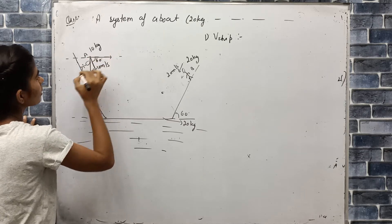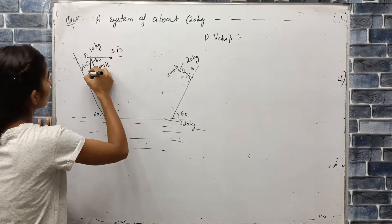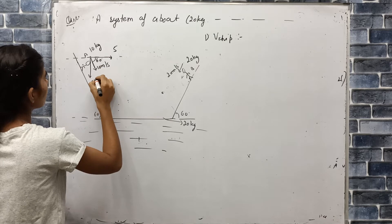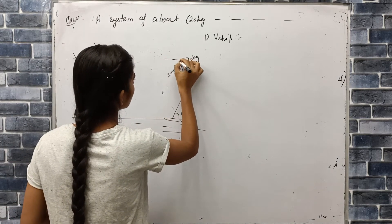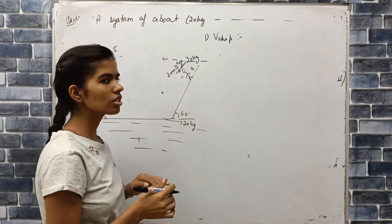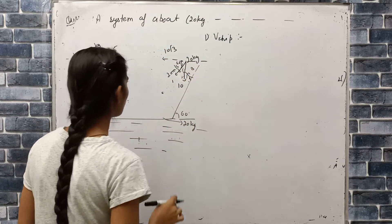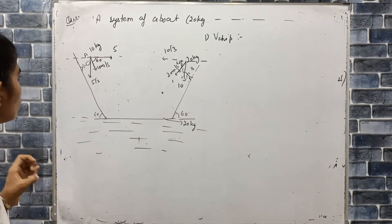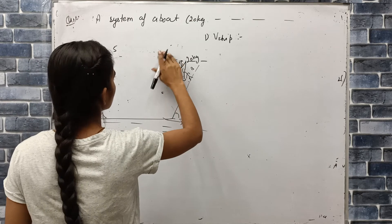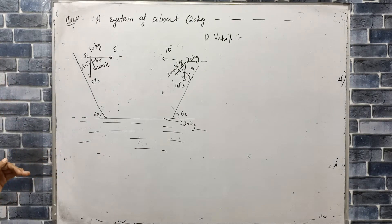We have two components at the bottom. For Mr. A running at 10 m/s at 60 degrees: 10 cos 60 = 10 × (1/2) = 5. For Mr. B running at 20 m/s at 60 degrees: 20 cos 60 = 20 × (1/2) = 10. Note that cos 60 = 1/2 and sin 60 = √3/2.